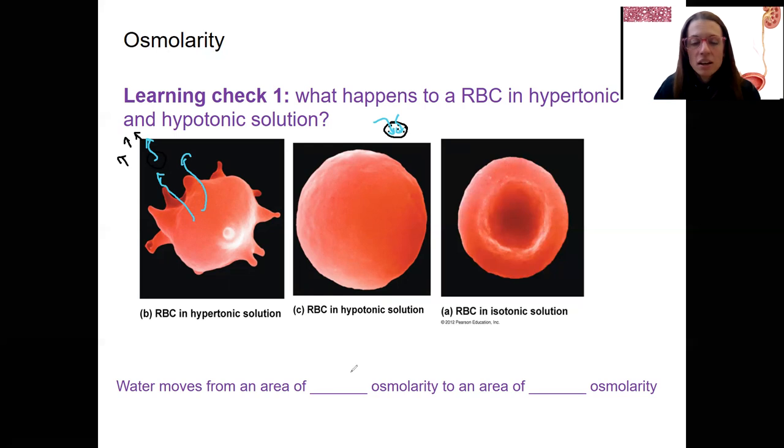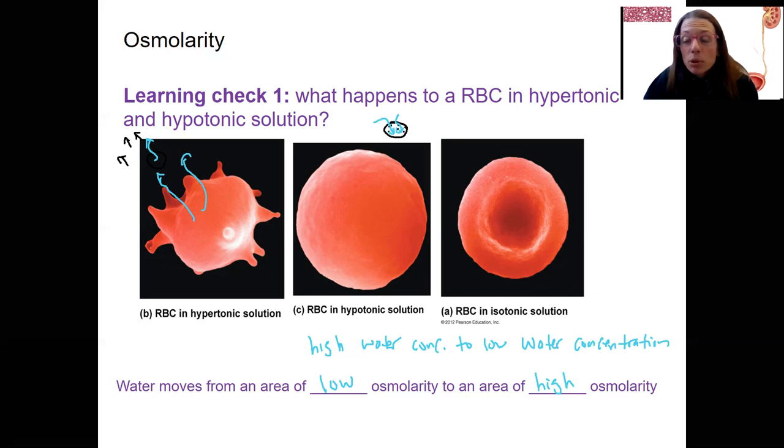What we just said is water is going to move from an area of low osmolarity to high osmolarity. Another way to say this is water moves from an area of high water concentration to low water concentration. This is a review of osmosis, which we've talked about before. So if you need to go back and review a little more than this, I'd recommend doing that.